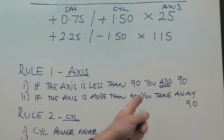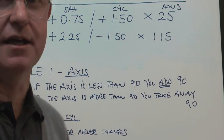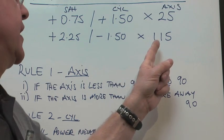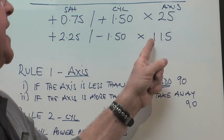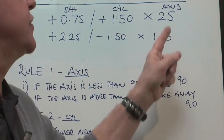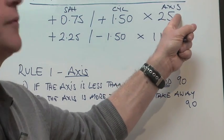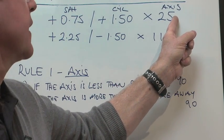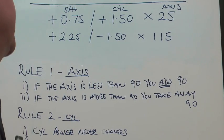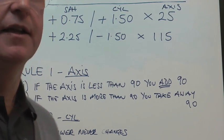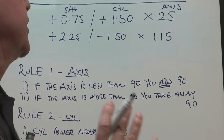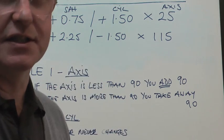If the axis is more than 90, you have to take away 90. So in this case, we've got 115. You take away 90 from that and you end up with 25. So for example, if you've got an axis of 180, that's more than 90. You take 90 off that, so you end up with an axis of 90.